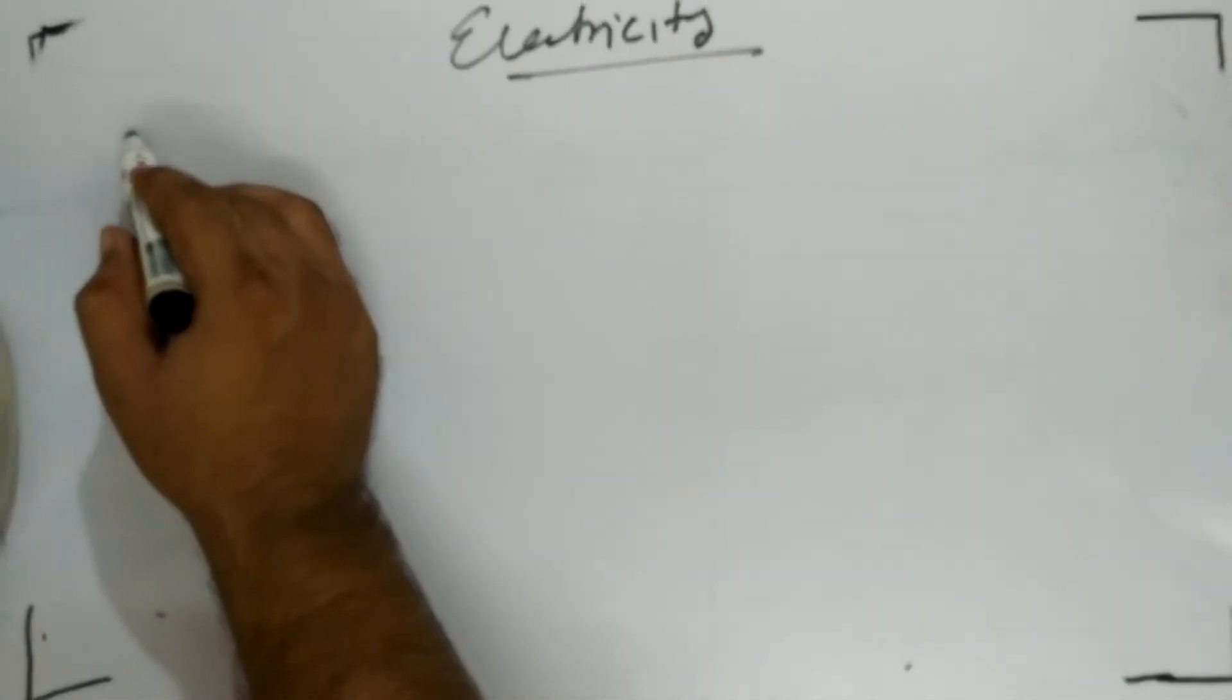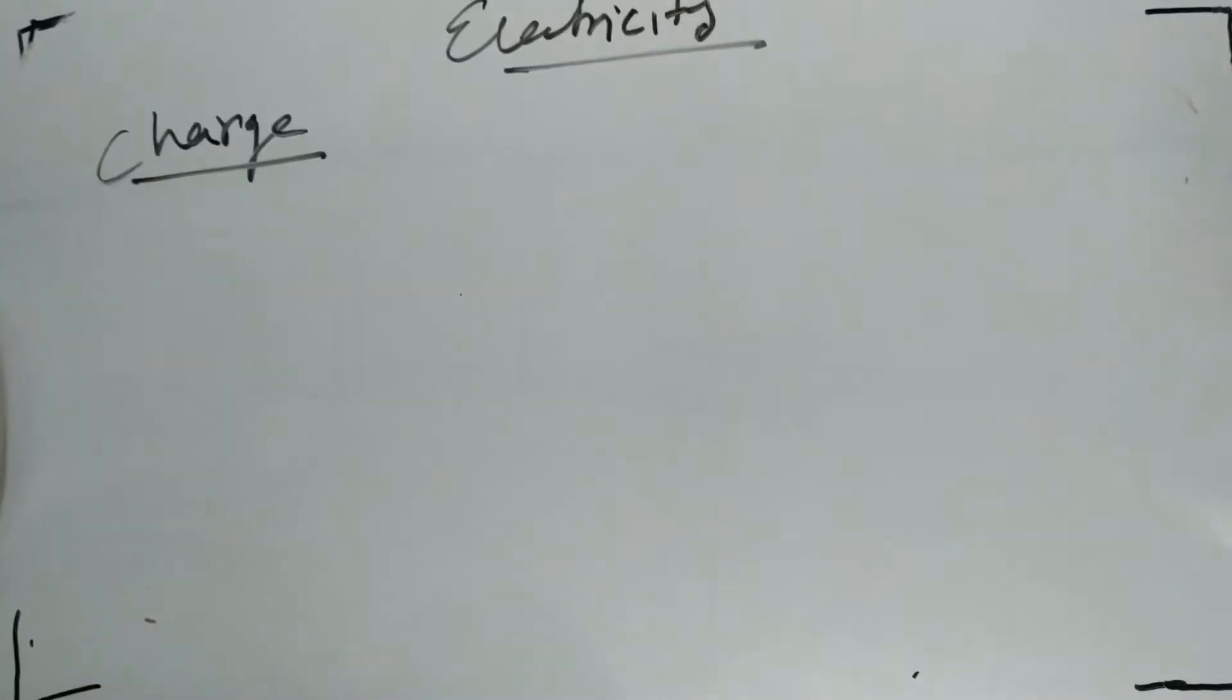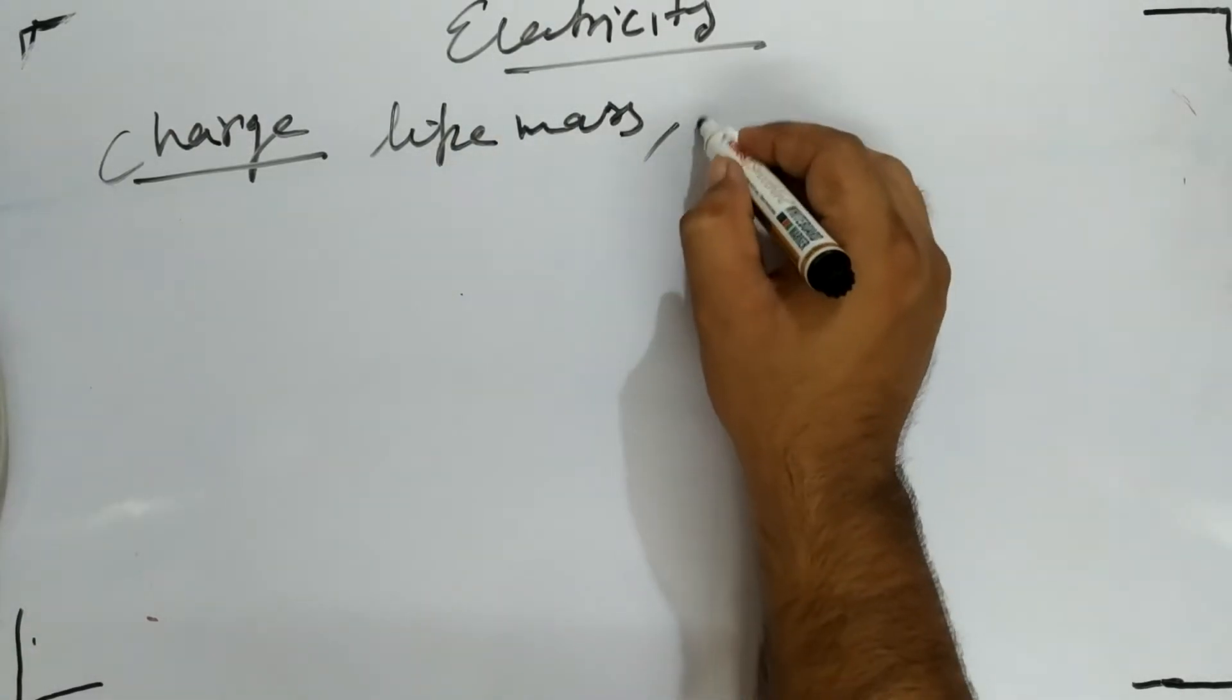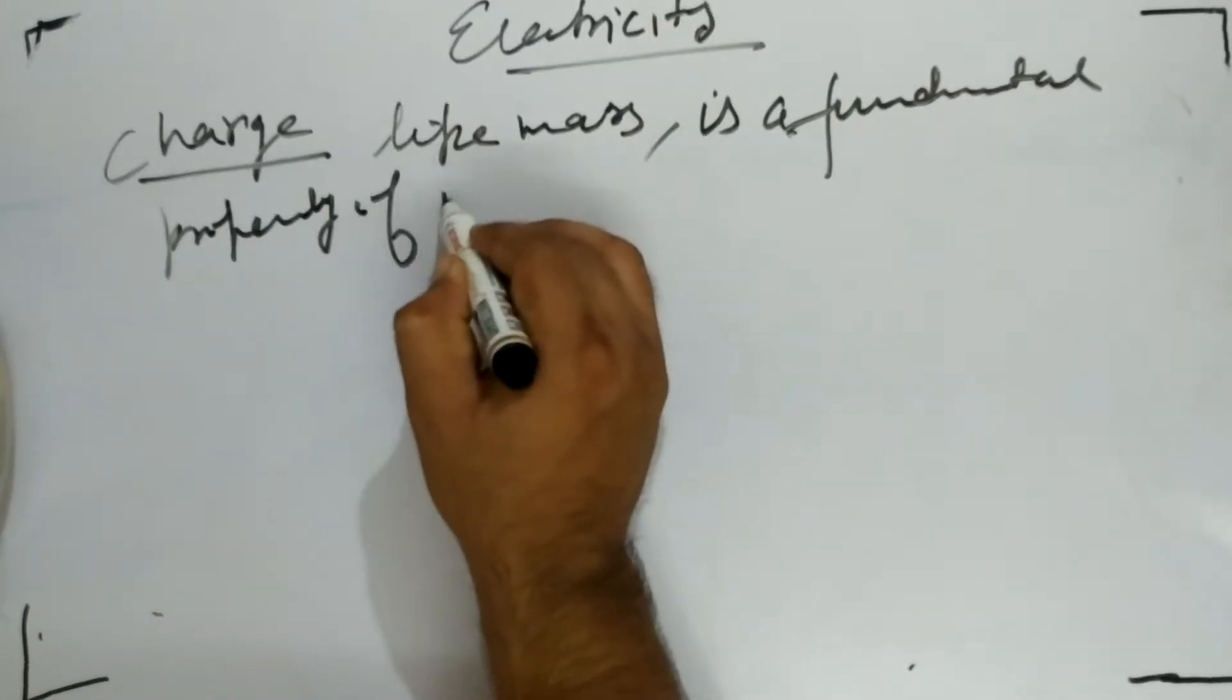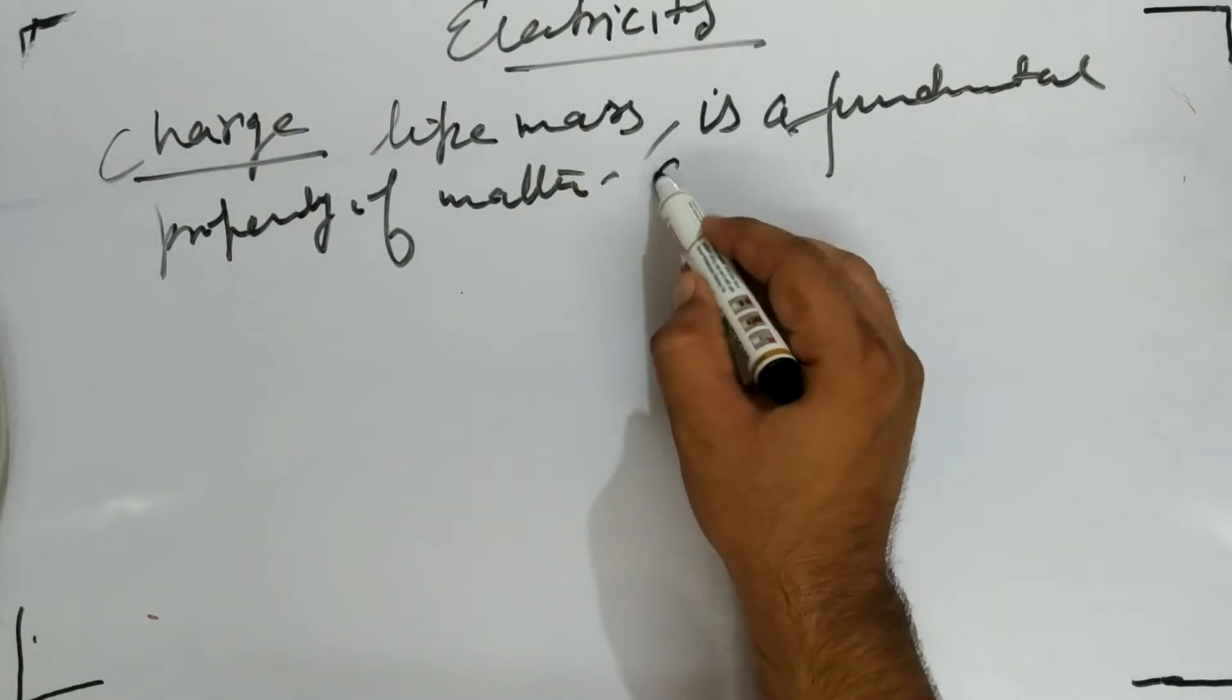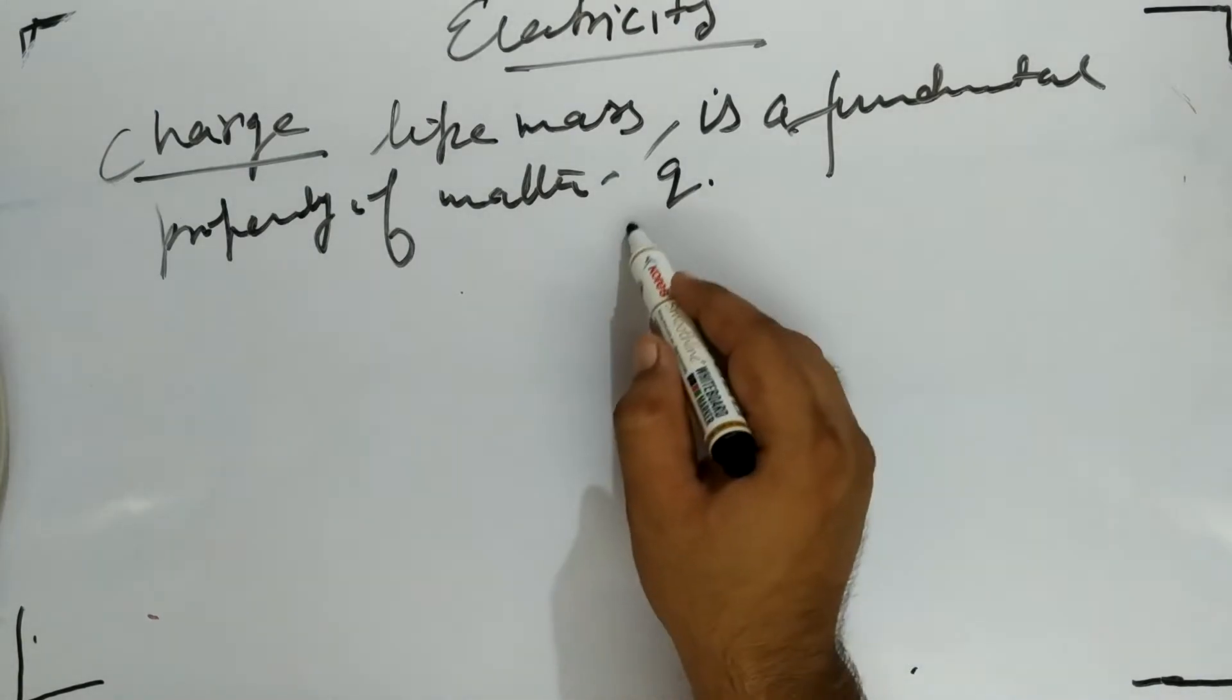We have first concept is charge. Charge, like mass, is a fundamental property of matter. Basically, charges are denoted by small q, sometimes capital Q. Charges are of